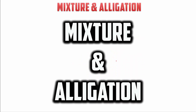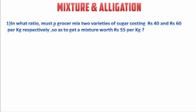Hello friends, welcome again. Today I'm going to be teaching you mixture and alligation. We start with a simple question and later we will move on to the difficult ones. The first question is: in what ratio must a grocer mix two varieties of sugar costing rupees 40 and rupees 60 per kg respectively